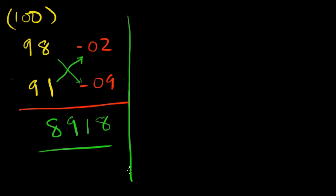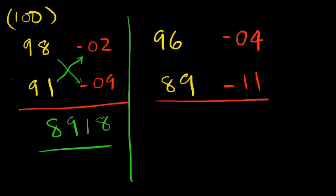Let's do a couple more. We're going to do 96 into 89. Same thing. Complements. There is 04. And here is 11. And we're going to do the same method. Either you do 96 minus 11 or you do 89 minus 4. Let's just do 89 minus 4. It's easier. It's 85. And 11 into 4 is 44.